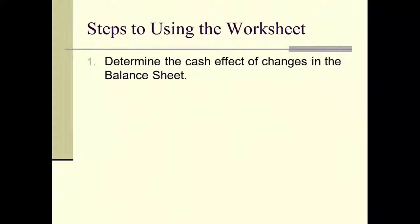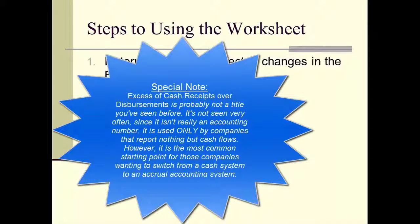With those concepts, we're now ready to start talking about the actual worksheet and doing an example. The very first step is to go through the balance sheet and use the shortcuts we've just talked about to find the cash effect of the change in all the balance sheet accounts. Right now, we're not going to worry about all the accounts in the balance sheet — we're just going to focus on a subset: those that help us change a net income number into cash flow from operations, or that allow us to start from the cash equivalent of net income and turn it into net income.